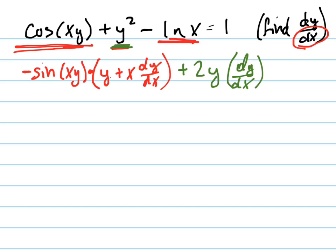And then the last thing I will do is take the derivative of the natural log of x, which, by the way, is a function entirely of x. So all I have to do is simply take the derivative. And what's the derivative of ln of x? 1 over x. It's 1 over x. And what's the derivative of 1? 0. It's 0.